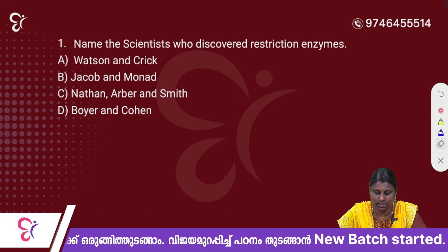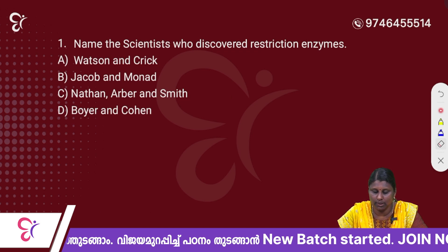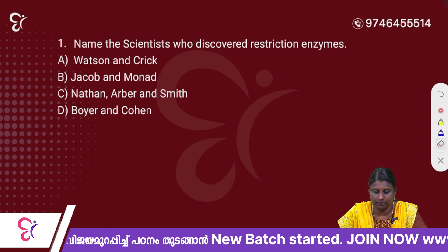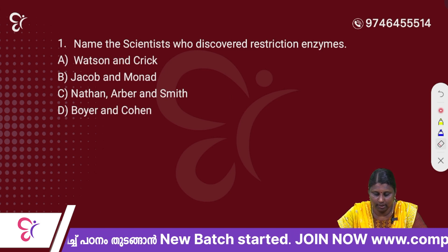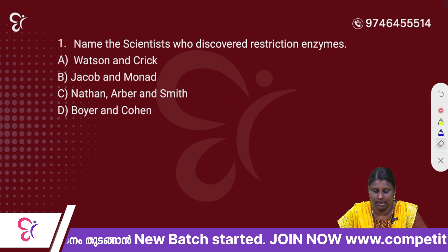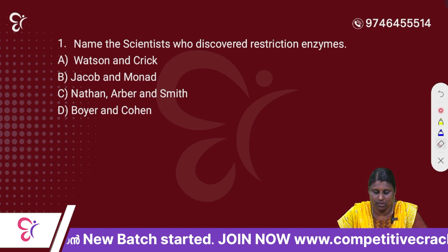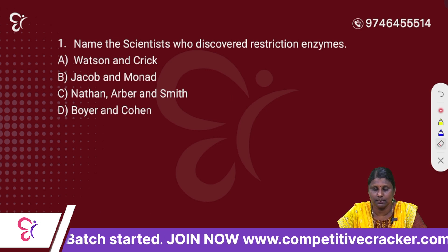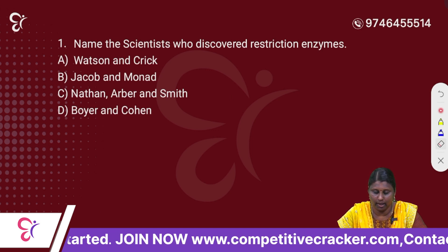First question: Name the scientist who discovered restriction enzymes. Option A: Watson and Crick. Option B: Jacob and Monad. Option C: Nathan, Arbor and Smith. Option D: Boyer and Cohen.